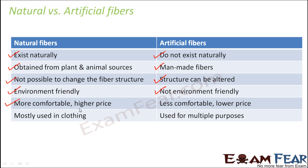Natural fibers are more comfortable but have a higher price — they are expensive, and we do not have control over their production. Artificial fibers have a lower price and are cheaper, but they are less comfortable. For example, a top made of cotton feels more comfortable to wear than one made of artificial silk. Natural fibers are mostly used in clothing, whereas artificial fibers are used for multiple purposes such as making ropes, parachutes, and kitchenware, utensils, and bottles in the case of plastics.